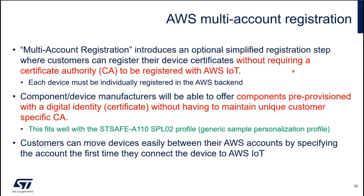This is really important: it means you don't need your device certificate signed by a certification authority — you can sign it yourself. But the drawback is that each device must be individually registered in the AWS backend. The benefit is no CA to maintain with a private key, but the drawback is you need to register your devices one by one. Each certificate must be known by the AWS backend.